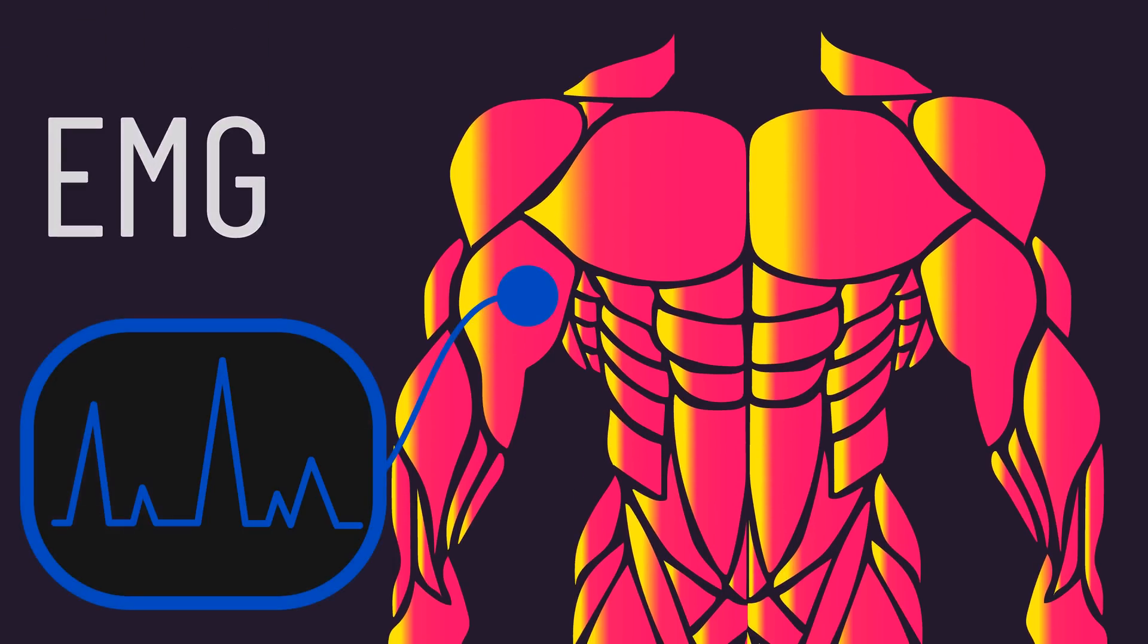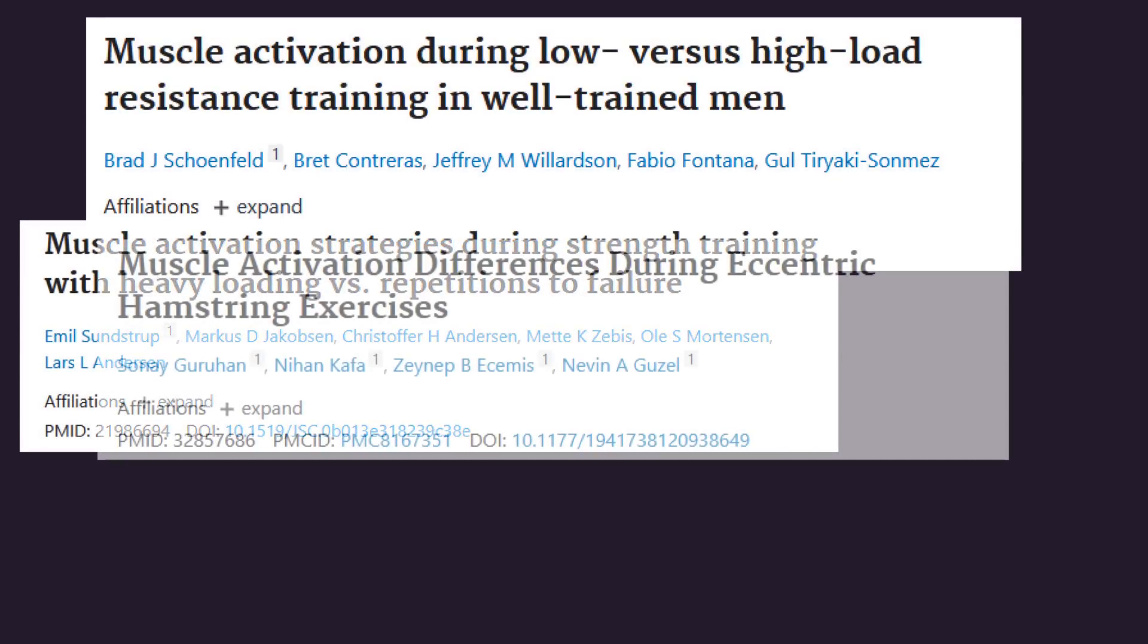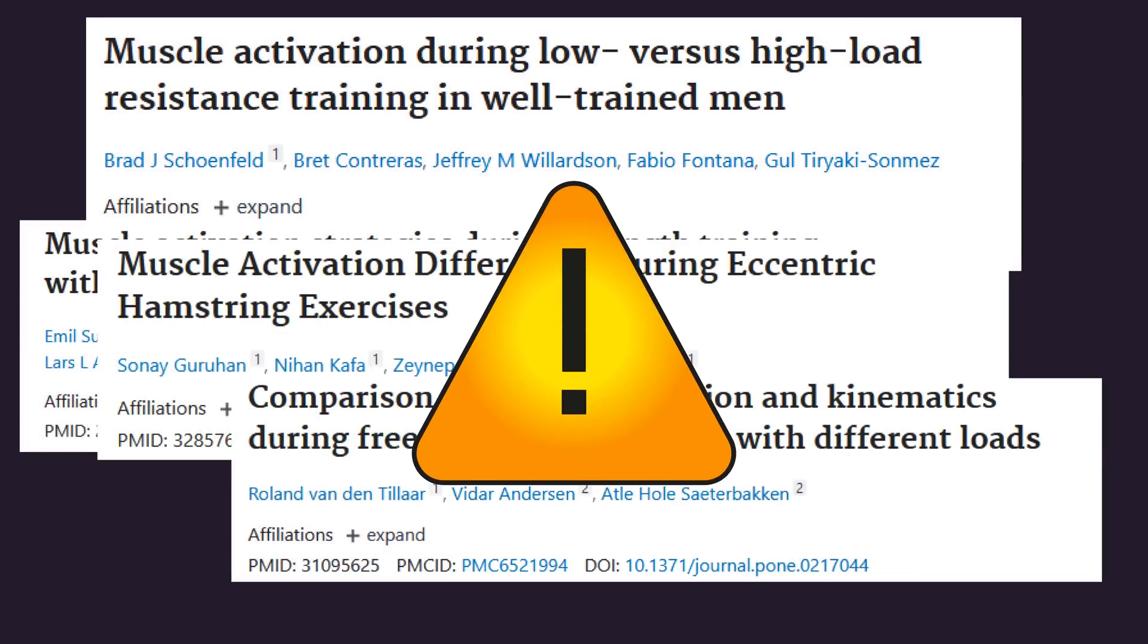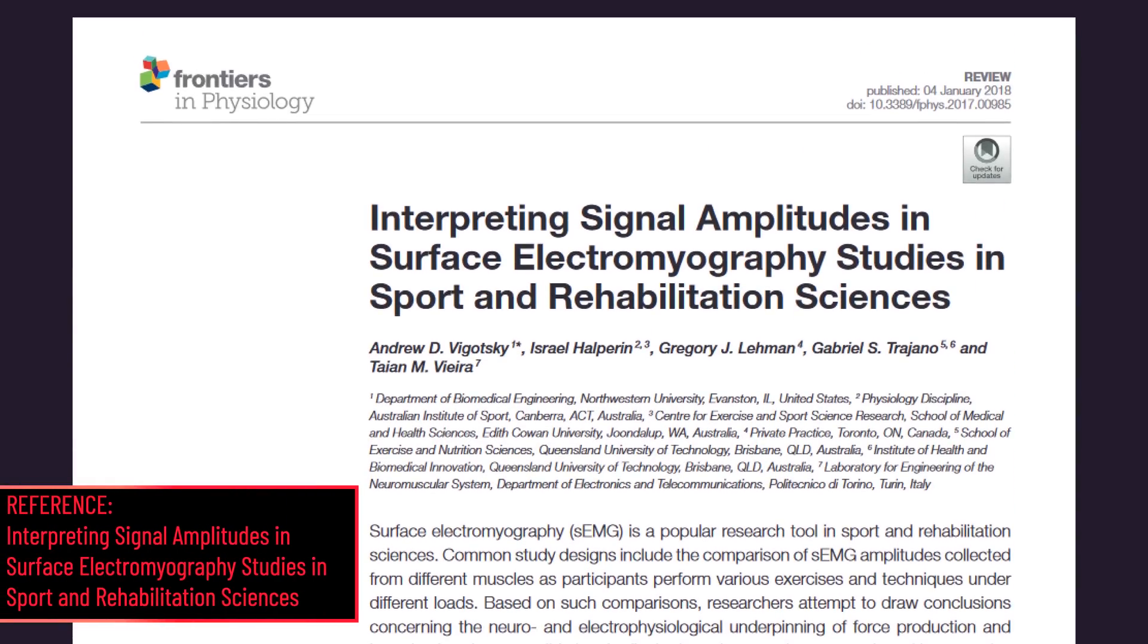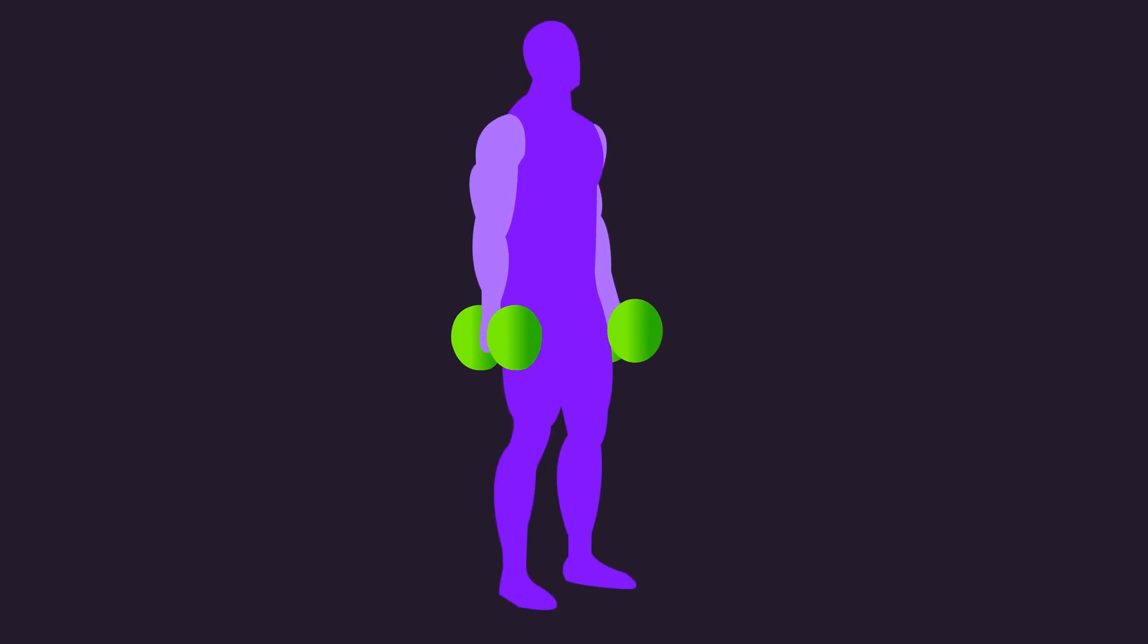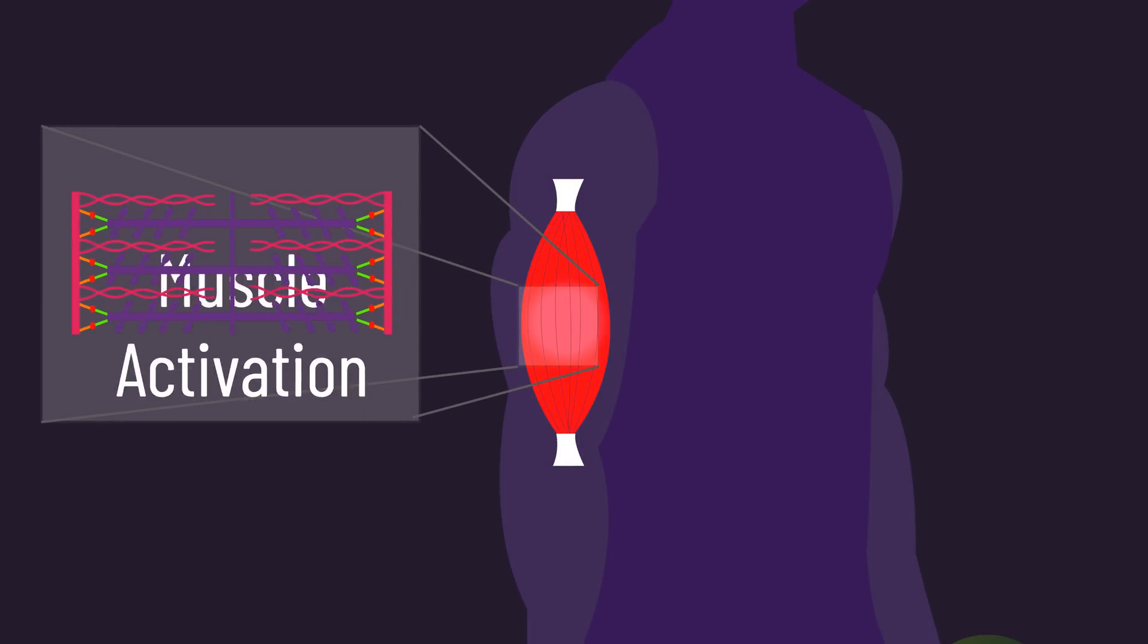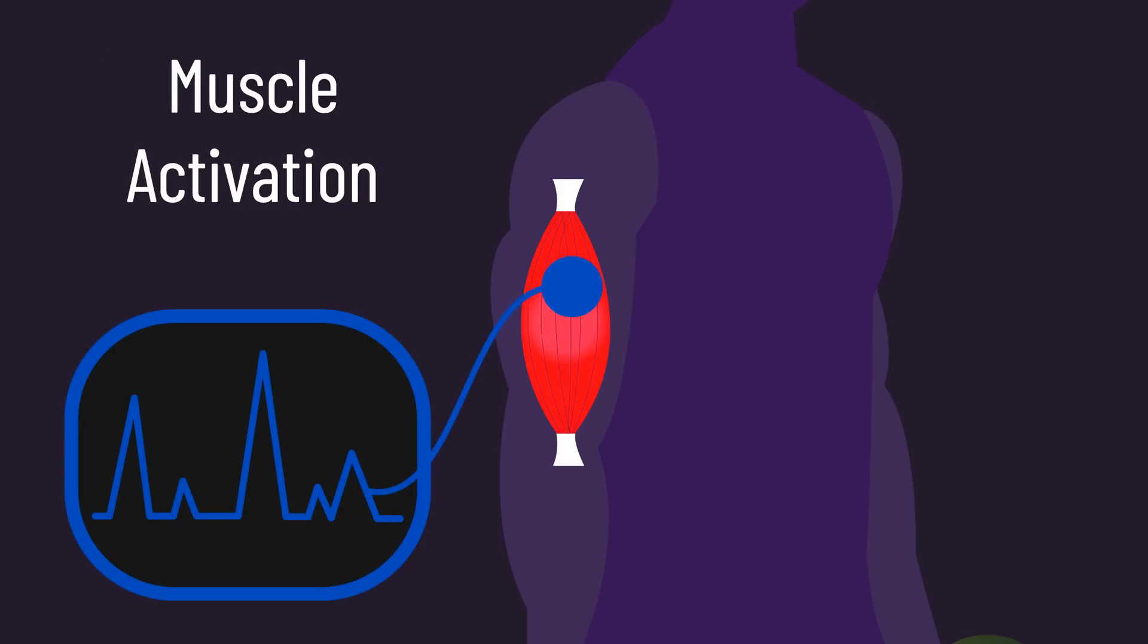EMG is said to measure muscle activation, not only by Ryan but by multiple scientific researchers too. The problem, as detailed in this 2017 article, is this isn't precisely true. Muscle activation is when the force-generating components within muscle fibers are in motion. Strapping electrodes to a muscle doesn't record this. So what does it record?